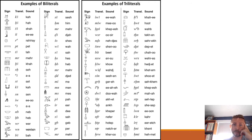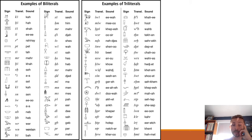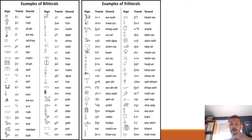You also have triliterals. We've got 'nesu' and 'bit,' which together — 'nesut-biti' — becomes the name for pharaoh, the king of Egypt: 'he of the sedge plant and the bee.' We'll encounter 'akhet,' the horizon with the sun rising. 'Kheper,' the dung beetle. The very common word 'nefer,' as in Nefertiti — 'the beautiful one has come.' 'Hotep,' an offering, which we'll see today. 'Netjer,' the symbol for god. 'Kheru,' which we'll also see today. All of these symbols are pretty common.